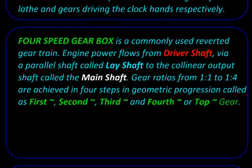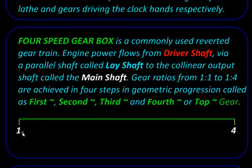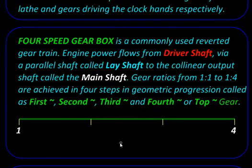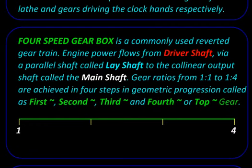Let us now see some broad steps in the design of such a gearbox. We start by taking the range of gear ratios we want to achieve, say from 1 to 4, and divide that into parts. These parts are not arranged in an arithmetic progression like 1, 2, 3, and 4, but rather in a geometric progression, so each gear ratio is a constant multiple of the previous one.